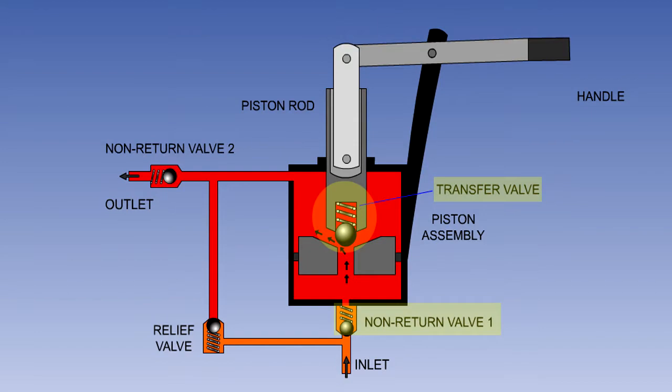When the handle is moved up, the piston assembly will move down. This will increase the pressure in the cylinder below the piston and hold NRV1 closed. At the same time, this pressure will be felt on the bottom of the ball in the transfer valve and it will open, allowing fluid to flow from below to above the piston.